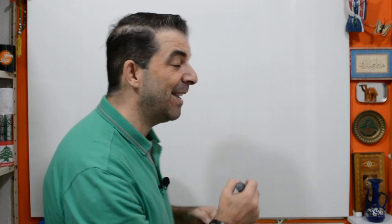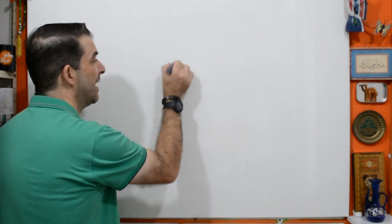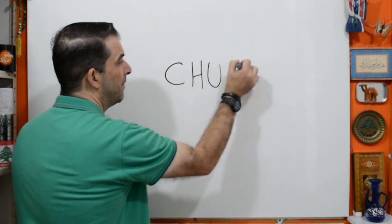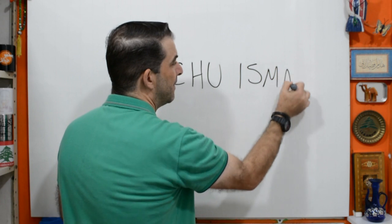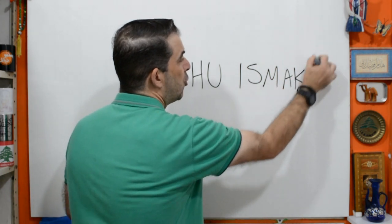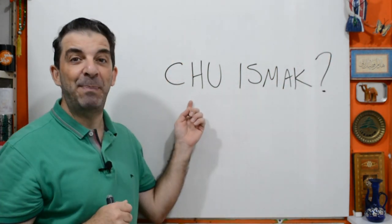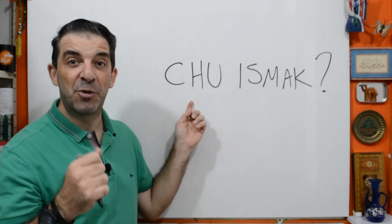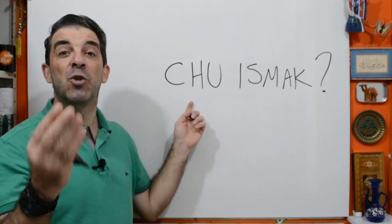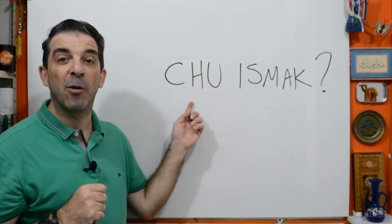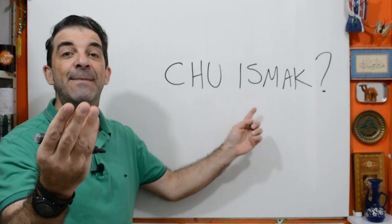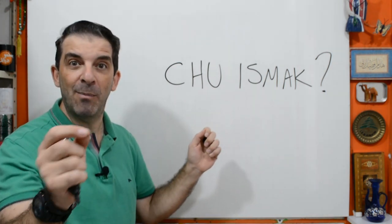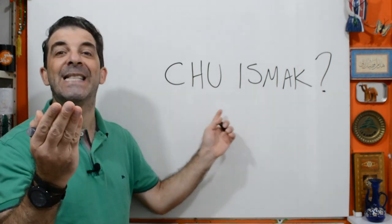So if you're facing someone and want to ask what's his or her name, please say and repeat: Shuu ismak. Shuu ismak. Please repeat out loud — this is a language lesson; if you want to learn, you must practice. So please repeat out loud: Shuu ismak. One more time: Shuu ismak.